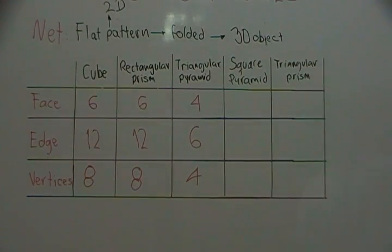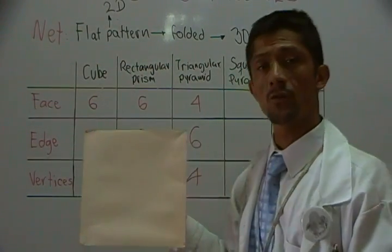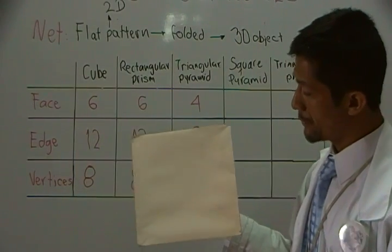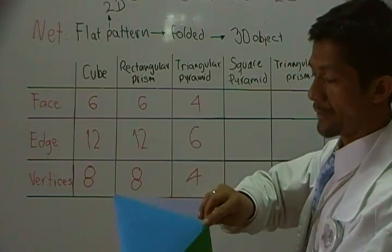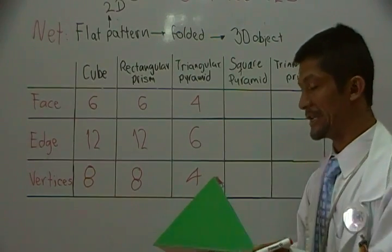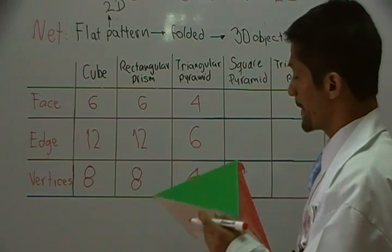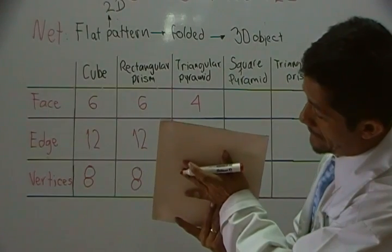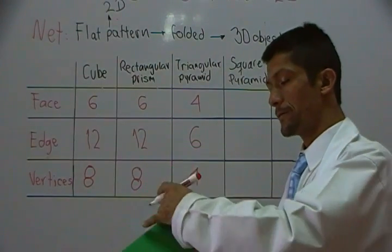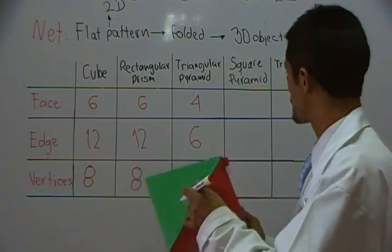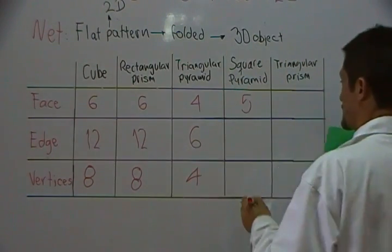The square pyramid is a pyramid whose base is a square. So here we can see the square, the base, and now four triangles. They actually look like the Egyptian pyramids. So here we have one face that is a square, plus four faces that are triangles, to get a total of five faces.